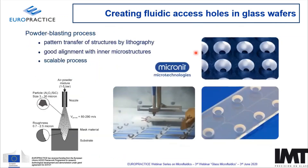The powder blasting process: you have a substrate, create a lithography mask of soft material, and particles are injected at high velocity onto the wafer. Where they find mask material they scatter back; where they hit the glass, they etch it away — creating a V-form profile. It's a very scalable process and due to lithography you have good alignment with the channel network structure.